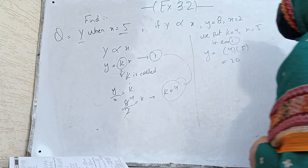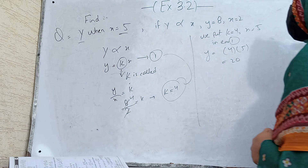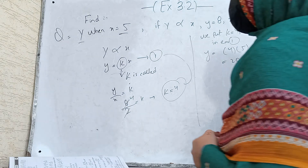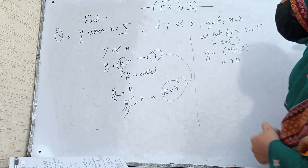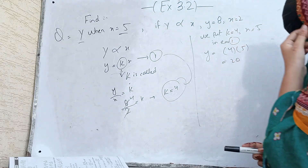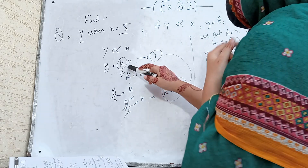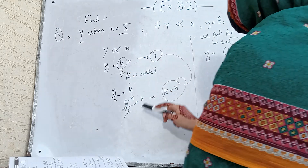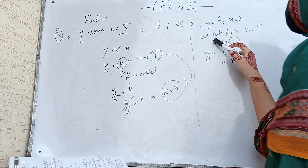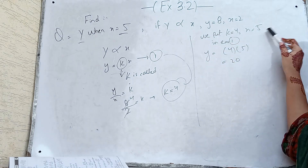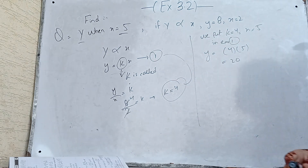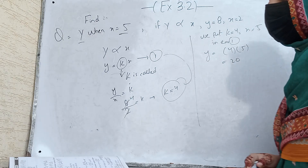From the statement, y is directly proportional to x with y equal to 8 and x equal to 2. We write y equals kx, find k equals 8 divided by 2, which is 4. Then we put k equal to 4 and x equal to 5 into equation 1 to find y, which is equal to 20.